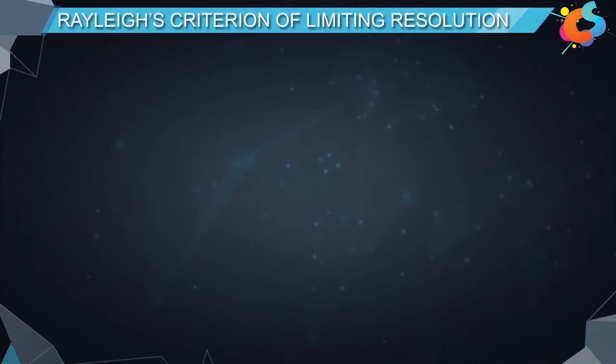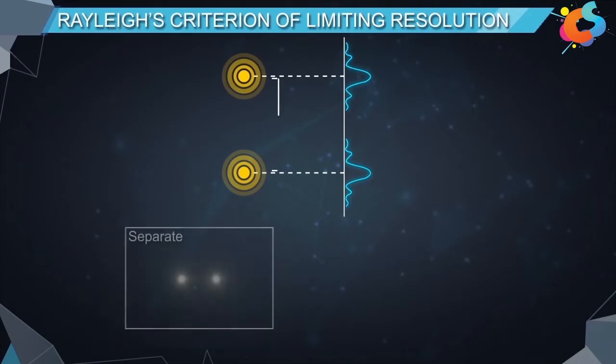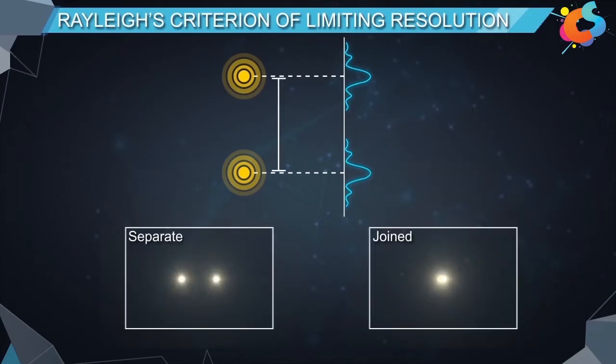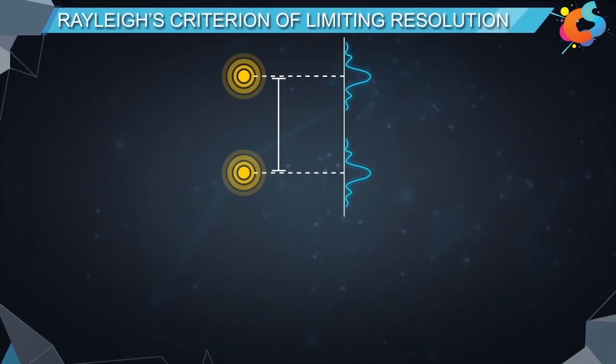Rayleigh's criterion of limiting resolution. When two point objects are seen with naked eye or with the help of an optical instrument, whether the two objects are seen as two separate objects or not depends on the separation between the centers of the bright disks of the images of the objects.